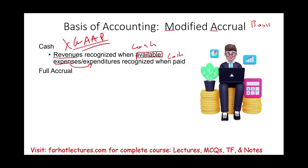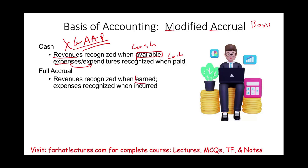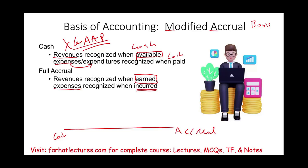In a nutshell, what is the basis of full accrual? When do you recognize revenue and expenses? You recognize revenue when earned — it means you did the work, you completed your side of the contract, you delivered the product. You don't have to receive cash; you can receive it later but recognize the revenue now. Expenses are recognized when incurred — meaning you record expenses as soon as you have a responsibility for them, even though you have not paid yet.